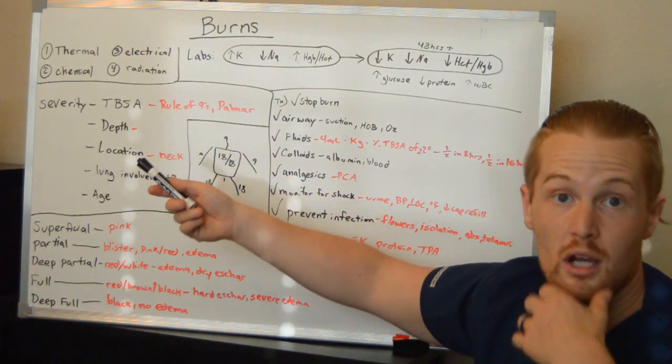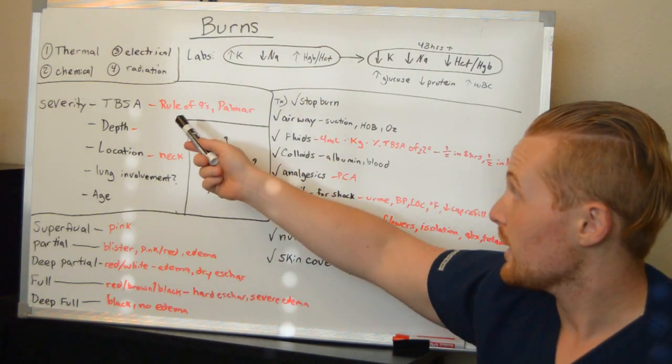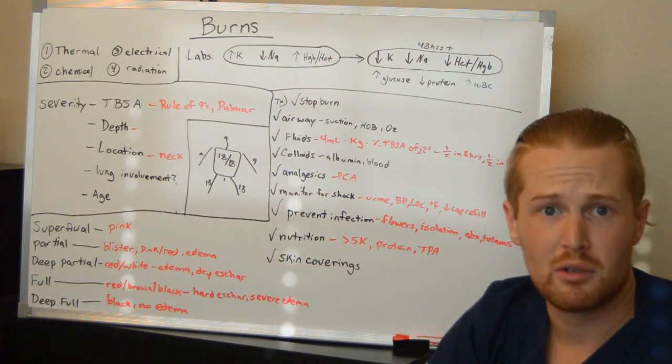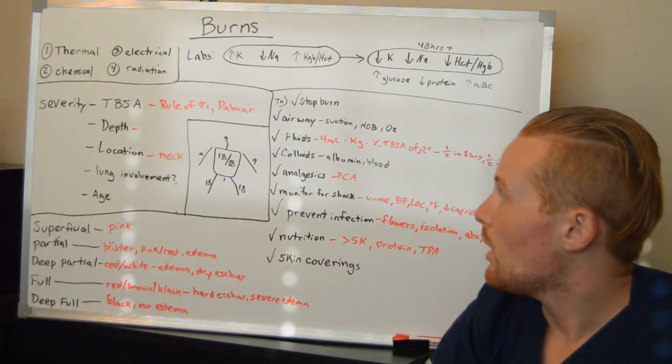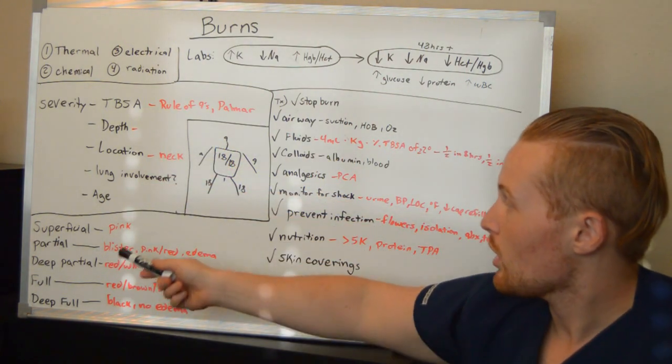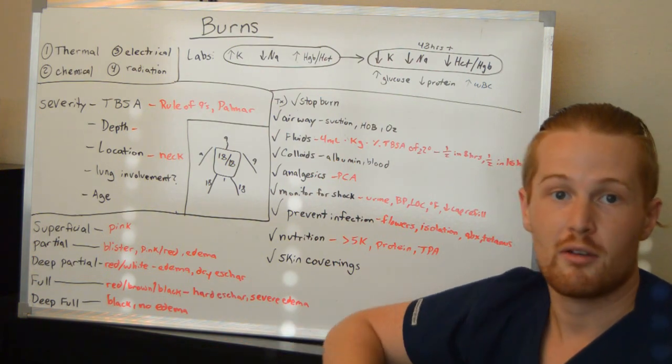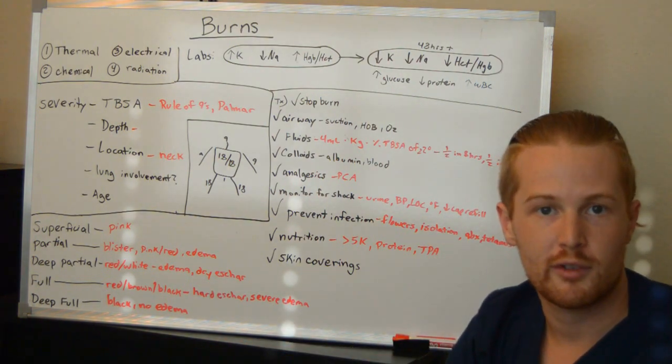Now, mortality is much more likely when the TBSA is high, especially greater than 40%. The depth of the burn is also very important. We're going to talk about that in just a second. This is where we talk about first degree, second degree, third degree, fourth degree burns.